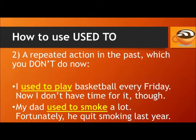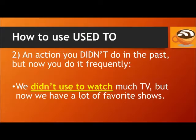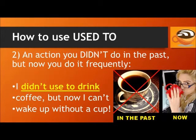We can also use 'used to' for a repeated action in the past which you don't do now. For example: I used to play basketball every Friday — now I don't have time for it, though. My dad used to smoke a lot; fortunately, he quit smoking last year. Use the negative form 'didn't used to' for an action you didn't do in the past but now do frequently. For example: We didn't used to watch much TV, but now we have a lot of favorite shows. I didn't used to drink coffee, but now I can't wake up without a cup.